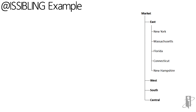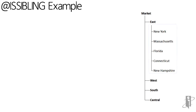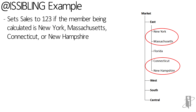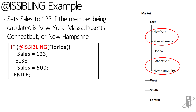For example, to determine if the member being calculated is a sibling of Florida: siblings share the same parent but exclude the member itself. The parent of Florida is East, whose children are New York, Massachusetts, Florida, Connecticut, and New Hampshire. Excluding Florida itself, its siblings are New York, Massachusetts, Connecticut, and New Hampshire. If isSibling(Florida) is true for one of those, sales will be set equal to 123.